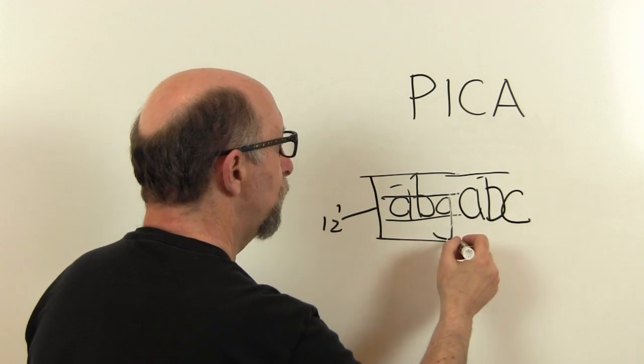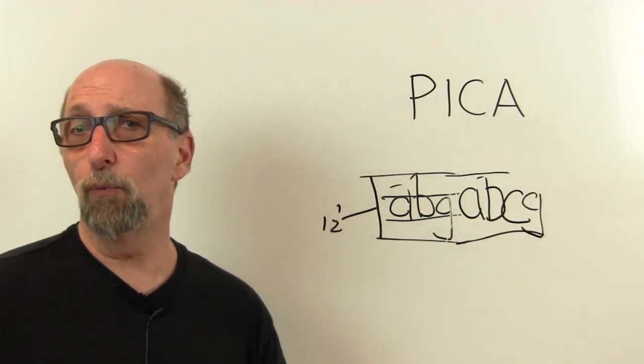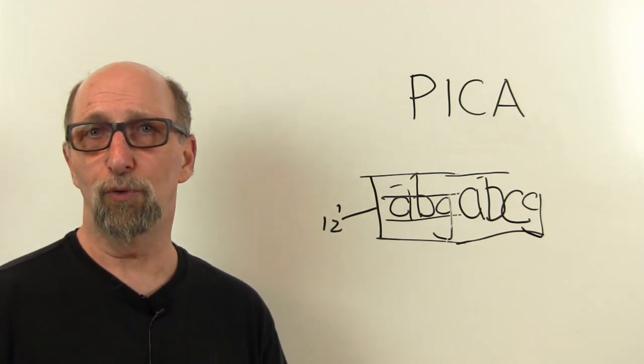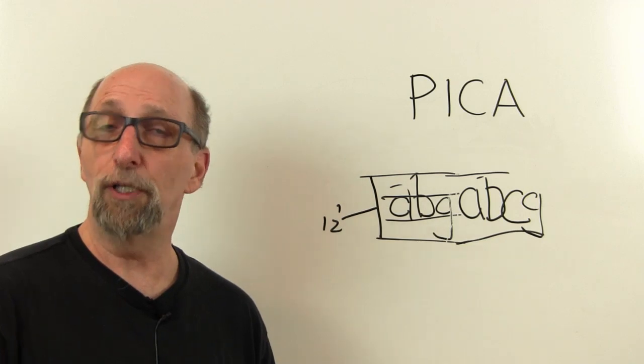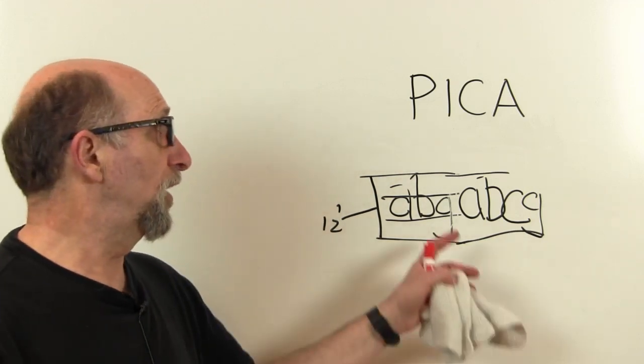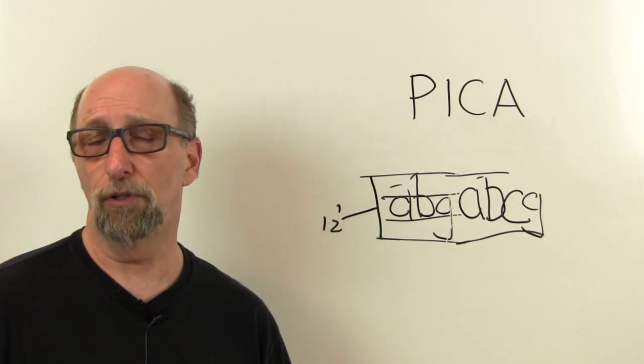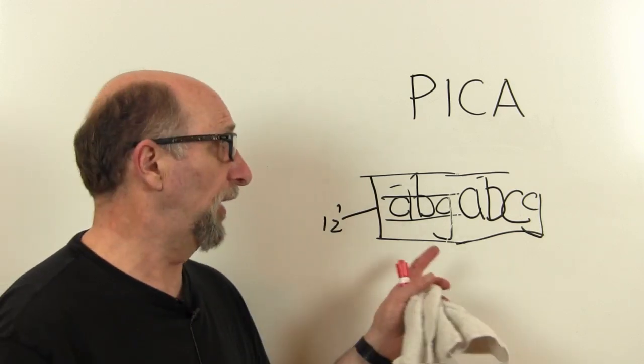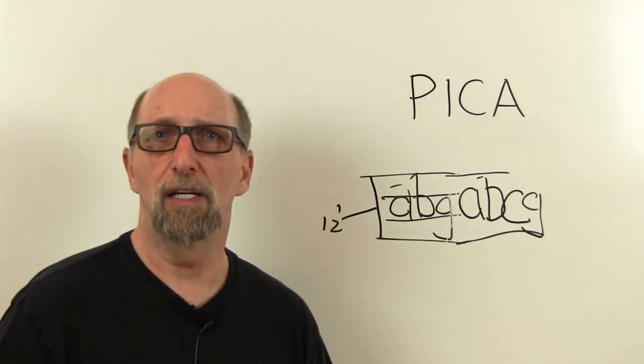If you look at this, you can realize that another typeface that's also 12-point could have much larger letters than this typeface, but as long as you can set them 12 points apart, it's still 12-point type. So what this means is that you can have 12-point type that's bigger and 12-point type that's smaller, but it's all 12-point type. The actual design of the letters—the type designer determines how big they're going to be or how they look on that line—but it's always going to have to be 12 points apart from line to line.